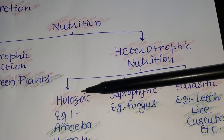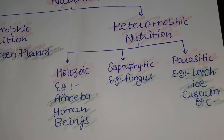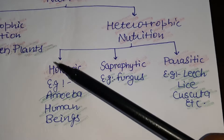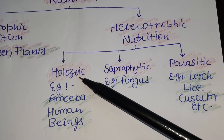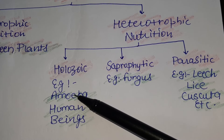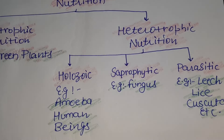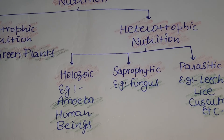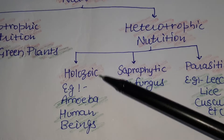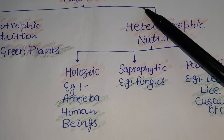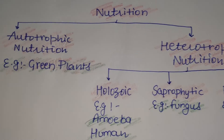Under heterotrophic nutrition, there are three types: holozoic, saprotrophic, and parasitic. In class, we have already discussed holozoic nutrition, saprotrophic nutrition, and parasitic nutrition. Under holozoic nutrition, we have already discussed nutrition in amoeba. The only part left under nutrition is nutrition in human beings, so today we are going to have a discussion about that.